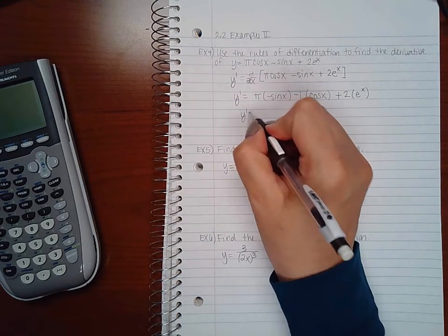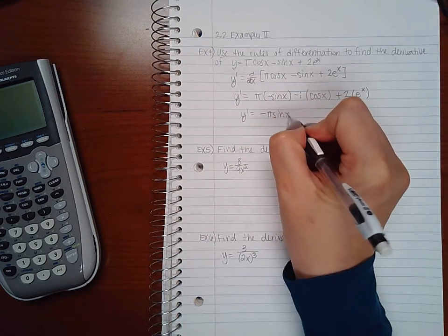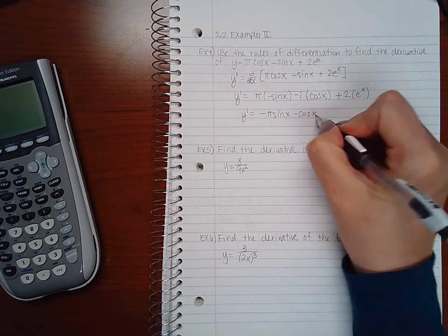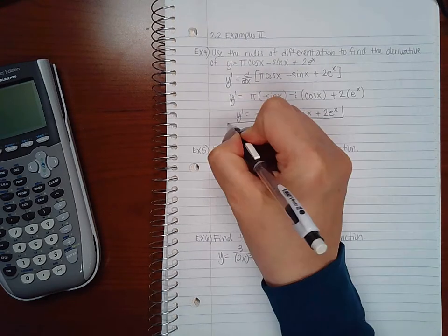So I end up with y' = -π sin x - cos x + 2e^x as my derivative.